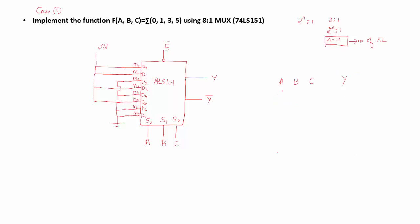When the input to the select line is 0, 0, 0, D0 gets connected to the output and D0 is connected to plus 5 volts which is logic 1, so output is 1. Now when input to the select line is 1, 0, 0, I know D4 gets connected to the output and D4 is connected to ground, so output will be 0.